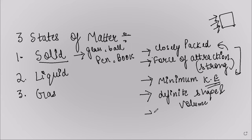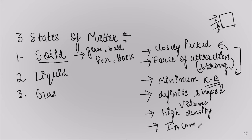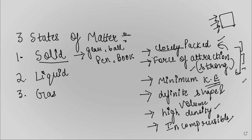Solids also have high density and cannot be diffused. Due to that they are incompressible. For example, with a ball, we can try to push it or mold its shape, but we cannot — the shape remains the same because particles are very closely packed with strong force of attraction, giving high density and making them incompressible. Because of one property, all other properties are interdependent.